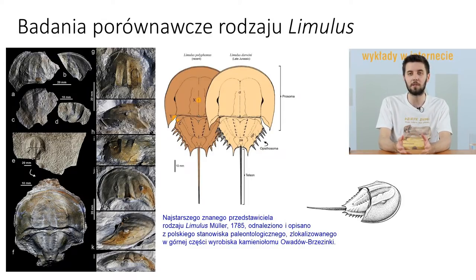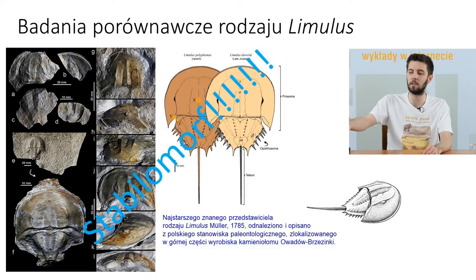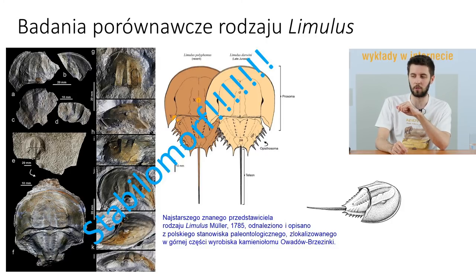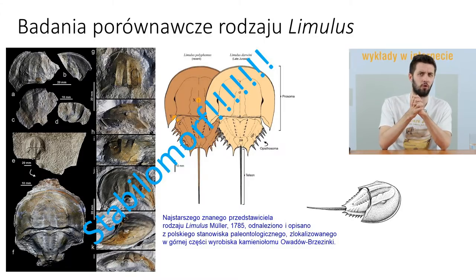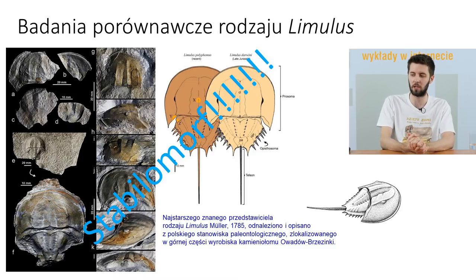Mamy dwa gatunki - Limulus polyphemus dzisiejszy i jurajski Limulus darwini - oba należą do rodzaju Limulus. Spełnia to kryterium taksonomiczne. Skoro w jurze, to przetrwały ostatnie wielkie wymieranie kredowe 66 milionów lat temu - więc skrzypłocze z rodzaju Limulus są stabilomorfami. Limulus żyje u wschodnich wybrzeży Stanów Zjednoczonych - u wybrzeży Nowego Jorku w sezonie letnim wychodzi na plażę masowo, żeby się rozmnażać. To są niezwykle wytrzymałe zwierzęta, mogące żyć w głębszej i płytszej wodzie, a nawet wyjść na brzeg.